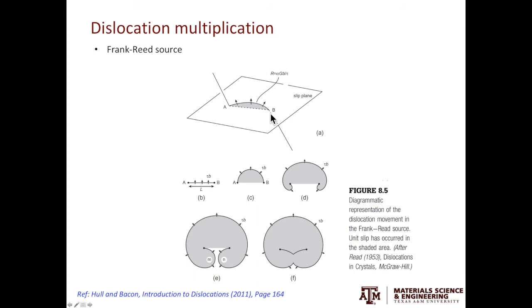Let's look at how Frank-Reed source works. We start with a straight segment, A and B, and the letter L denotes the dislocation source size. After applying a shear stress, the dislocation line can bow out, and bow out even more like that. Notice these two segments. As the dislocation further grows, they can coalesce and form a loop, and the remnant part becomes a new dislocation. This process can continue operating and generate more and more dislocations from a single source.